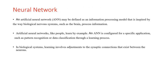An Artificial Neural Network — ANN — may be defined as an Information Processing Model that is inspired by the way Biological Nervous Systems, such as the brain, process information. This model tries to replicate only the most basic functions of the brain. The key element of an Artificial Neural Network is the structure of its information processing elements. The network is composed of a large number of highly interconnected processing elements — that is, neurons — working in unison to solve specific problems.